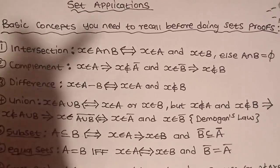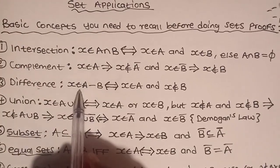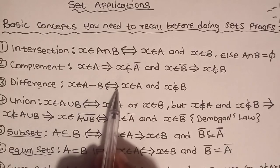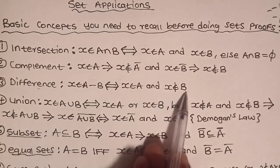The difference: X is an element of A minus B, if and only if X is in A and X is not in B.